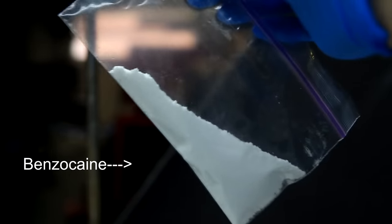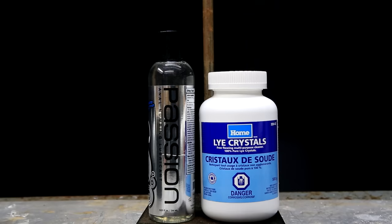Without further stalling we can get on with the extraction. For this experiment you're going to need some maximum strength anal lube by Passion. This is the best product for extracting lidocaine because it has the highest concentration of 5% and it has no emulsifiers or surfactants. The only chemical required for the extraction is sodium hydroxide.